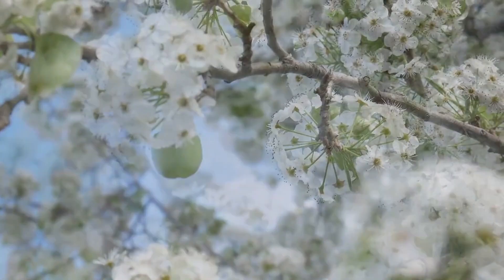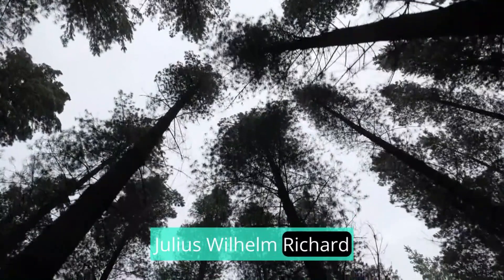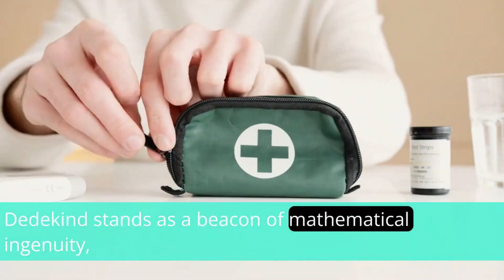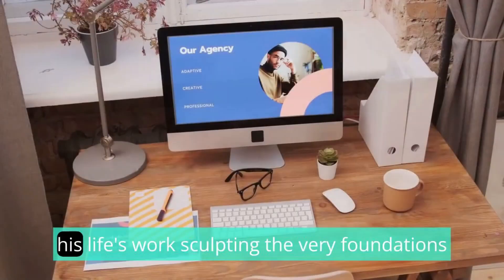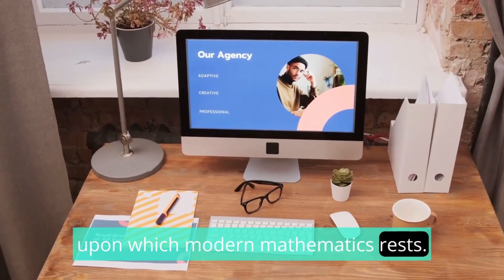Julius Wilhelm Richard Dedekind, Architect of Modern Mathematics. Julius Wilhelm Richard Dedekind stands as a beacon of mathematical ingenuity, his life's work sculpting the very foundations upon which modern mathematics rests.